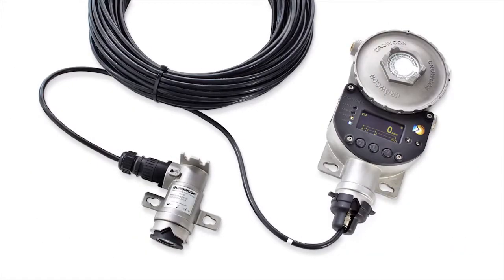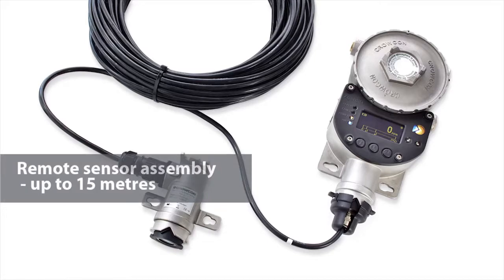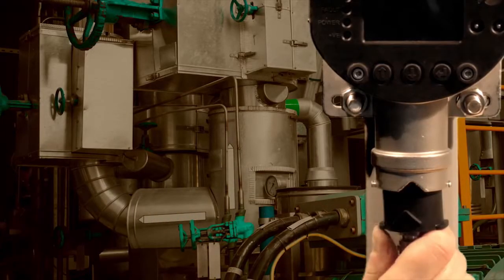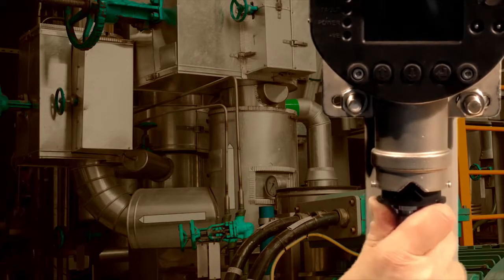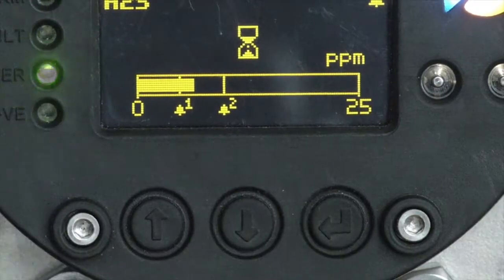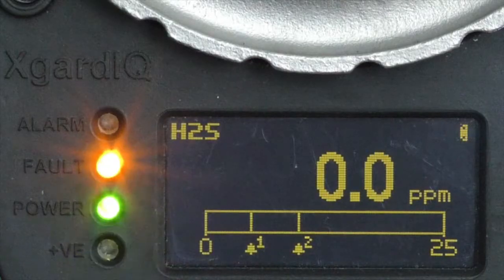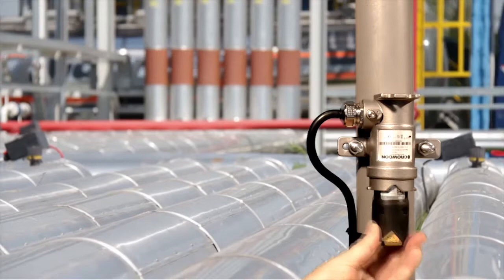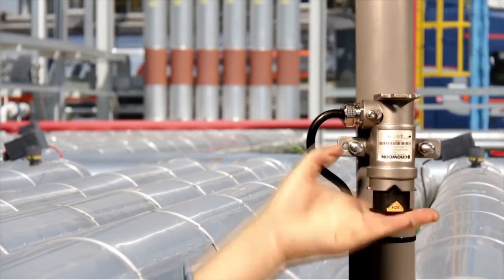X-Guard IQ can now be installed with a remote sensor assembly up to 15 meters away from the transmitter. Because gas leaks can occur in inaccessible places and different gases behave in different ways, this allows the transmitter to be situated where it provides easy access for reading or manipulation while the sensor is installed in the best location to monitor for gas leaks.